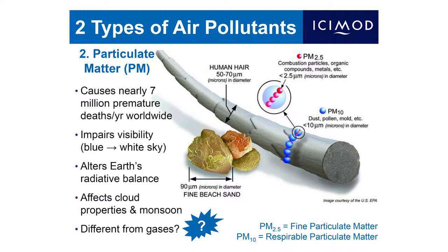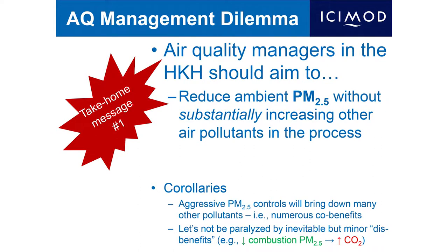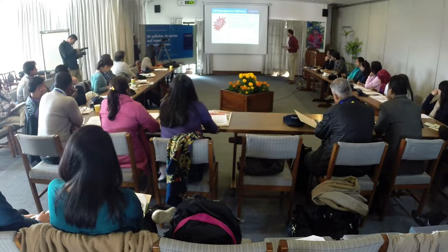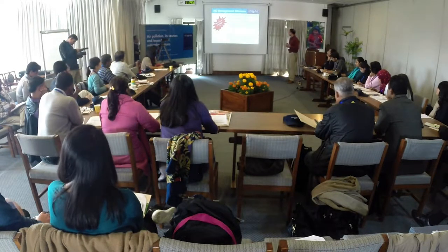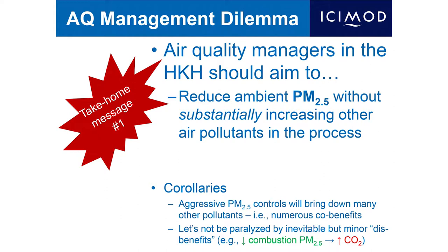Particulate matter causes premature mortality, heart attacks, and radiative effects. Because of the numerous effects it has, it is right now our top priority air pollutant. In the Hindukush Himalaya region, policy makers responsible for managing air quality should focus on reducing fine particulate matter substantially without making substantial increases in other pollutants. If we take aggressive controls on reducing fine particles, that will bring down the concentrations of many other pollutants in the same process.